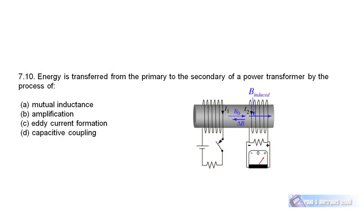Question 7.10: Energy is transferred from the primary to the secondary of a power transformer by the process of Faraday's Law and mutual inductance between the two coils.